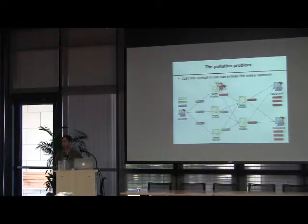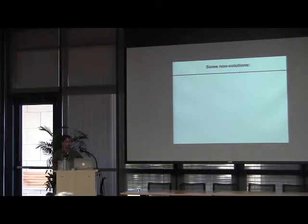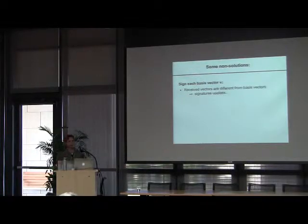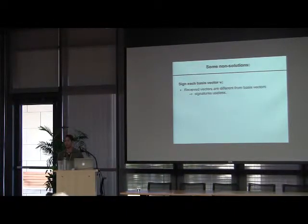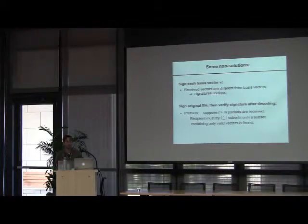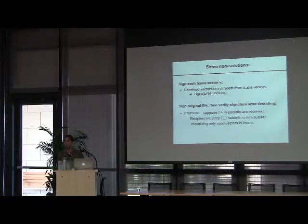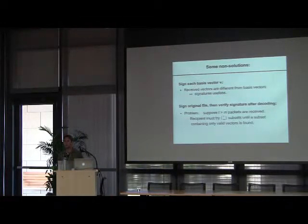So this is a problem. The idea is to use cryptographic techniques to try to mitigate it. Here are some ideas that don't work. We could sign each of the initial vectors sent into the system — but the problem is that the received vectors are ultimately different from the initial vectors, so there's no way to verify the signature. Another attempt would be to sign the original file, decode using network coding, and then verify the signature. The problem is if we receive many packets and many of them are corrupt, we must try lots of subsets until we find one that contains only valid vectors — we'd probably have to try exponentially many subsets, so that's not a good solution either.